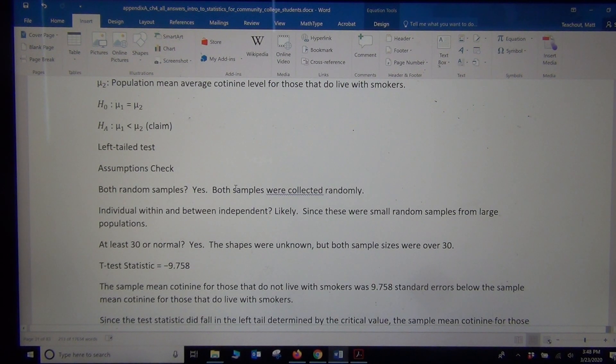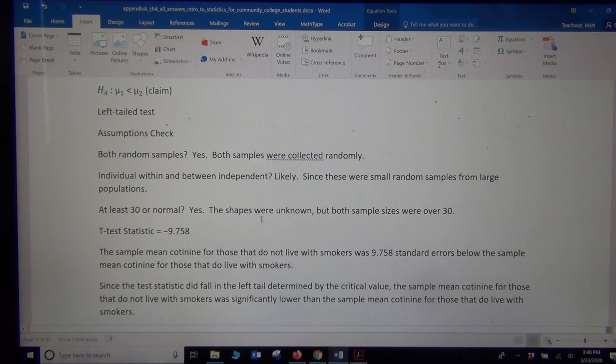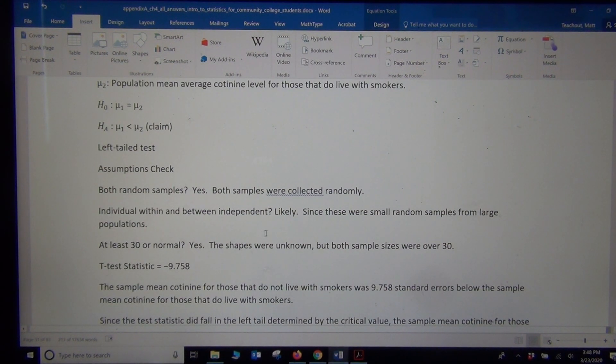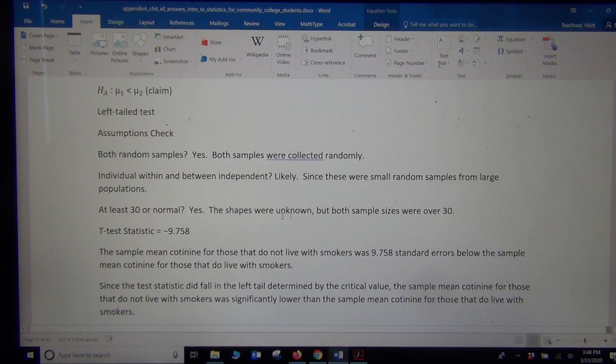Okay, so our assumptions. Both samples were collected randomly. Small random samples from large populations are usually not going to get people that were related to each other. Both the sample sizes were over 30. So we're going to pass the 30 or normal. It did not tell us what the shapes were, which I wish I would have known. But it's still going to pass because both samples were over 30.